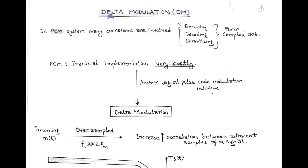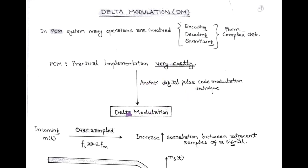Hello friends, our next topic is Delta Modulation or DM. In the last video lecture, we discussed Pulse Code Modulation. In PCM, many operations are involved such as encoding, decoding, quantizing, etc., forming a complex circuit, so its practical implementation is very costly. We now move to another digital pulse communication technique which is more efficient and less costly compared to PCM, called Delta Modulation.